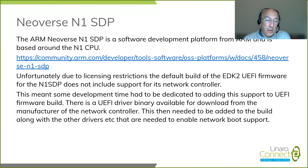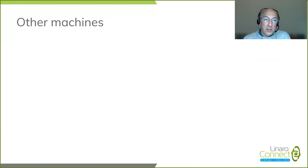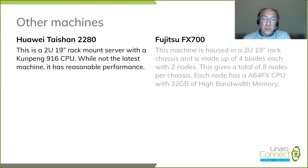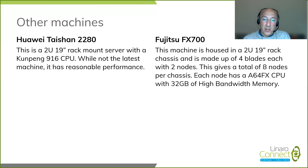The other machines we are making use of will be the Huawei Taishan 2280 — a 2U 19-inch rack mount server with a Kunpeng 916 CPU. While this may not be the very latest machine, it does have reasonable performance. The Fujitsu FX700 is housed in a 2U 19-inch rack chassis and is made up of four blades, each with two nodes, giving a total of eight nodes per chassis. Each node has an A64FX CPU with 32 gigabytes of high bandwidth memory.